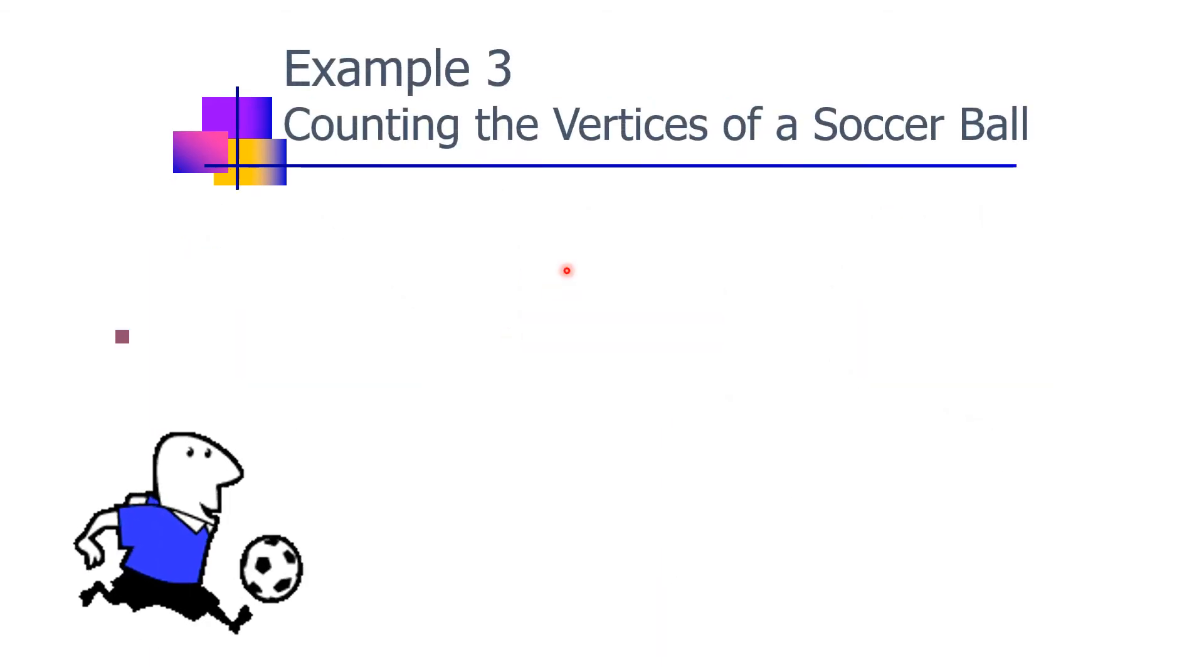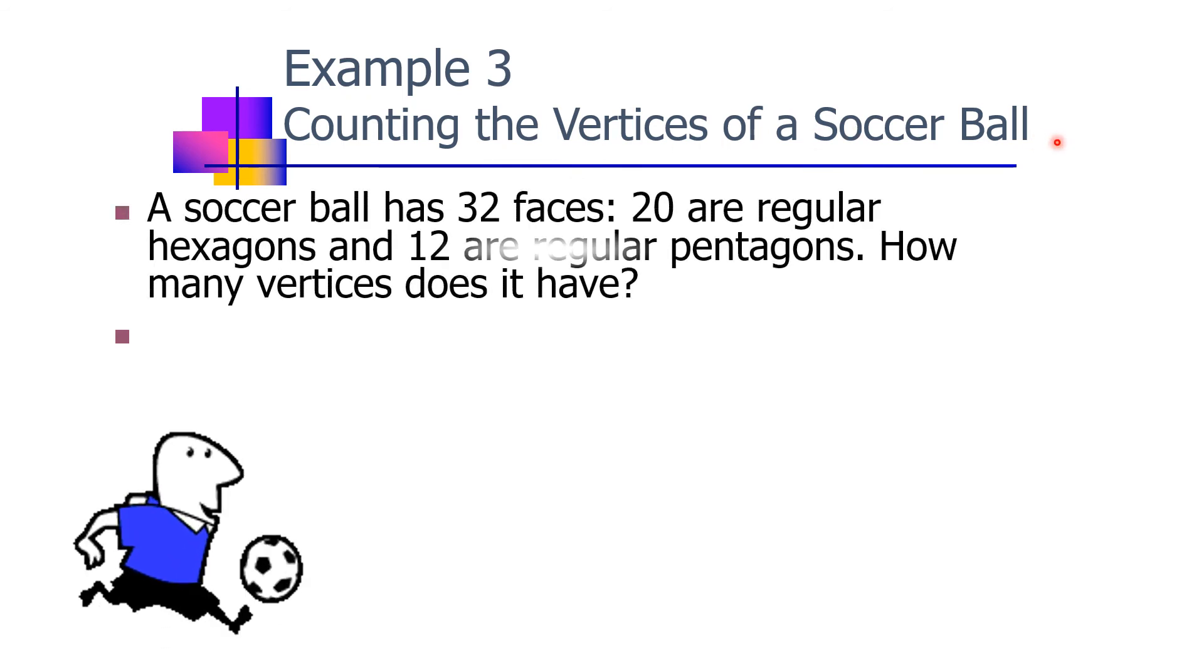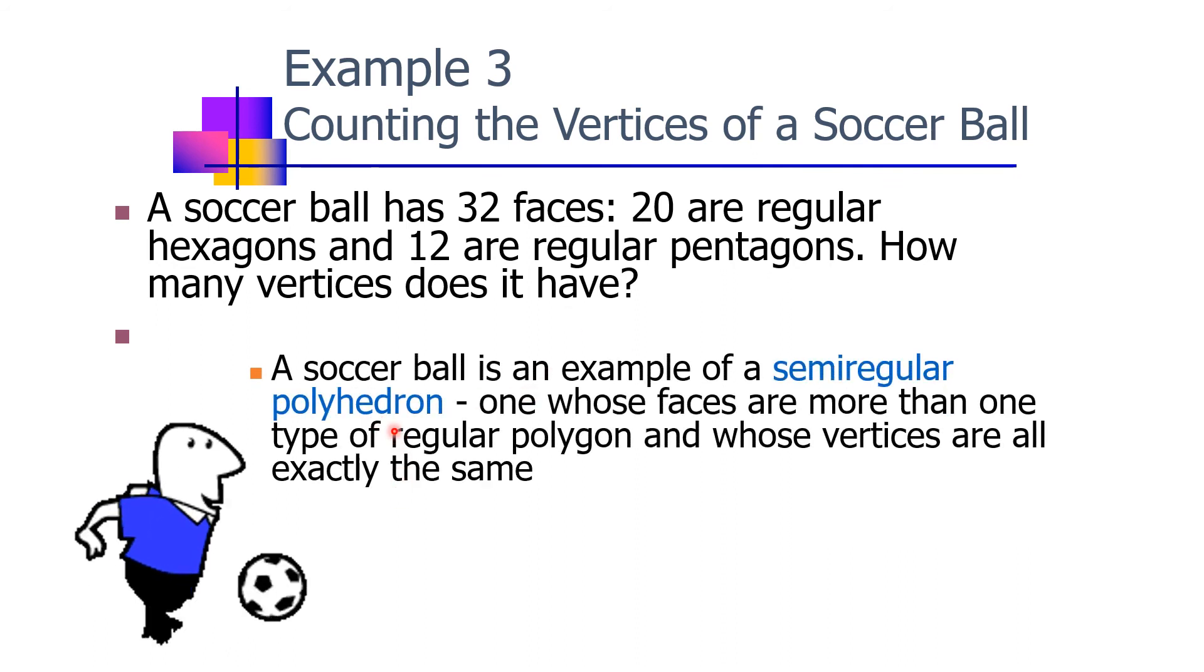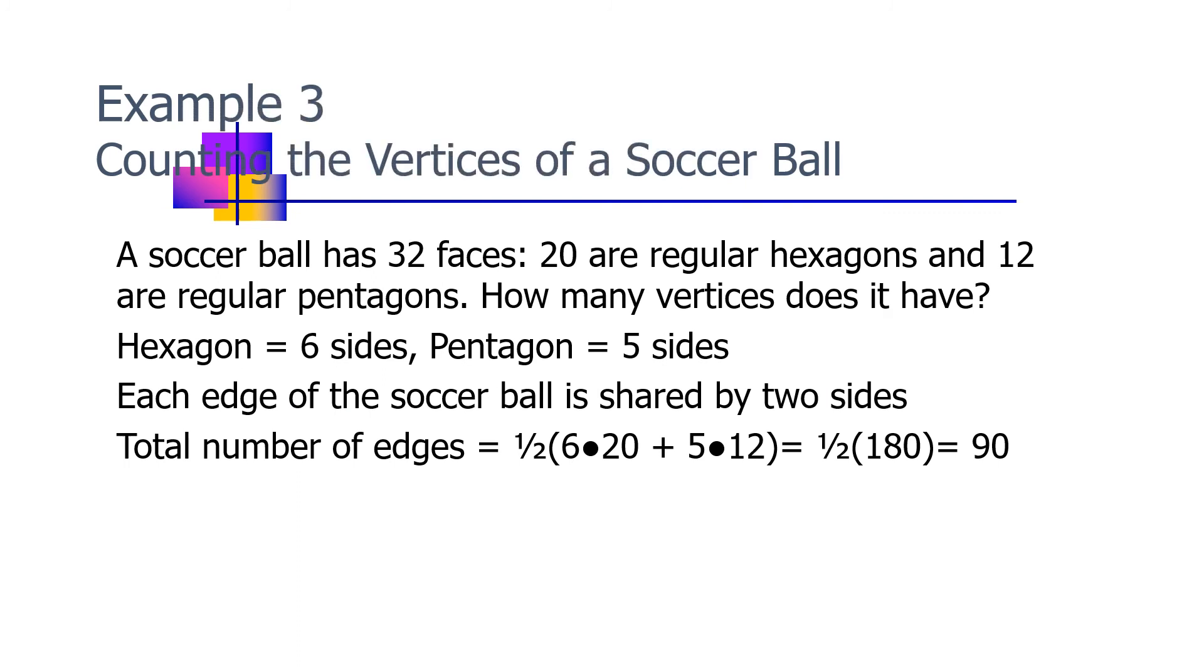Example three: counting the vertices of a soccer ball. A soccer ball has 32 faces: 20 are regular hexagons and 12 are regular pentagons. How many vertices does it have? A soccer ball is an example of a semi-regular polyhedron, one whose faces are more than one type of regular polygon and whose vertices are all exactly the same.